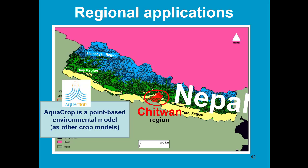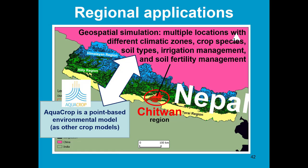As most crop models, AquaCrop is a point-based model. For regional applications, however, you need to consider the geospatial variations. These include multiple locations with different climate zones, different crop types, soil types, irrigation management, and soil fertility management.